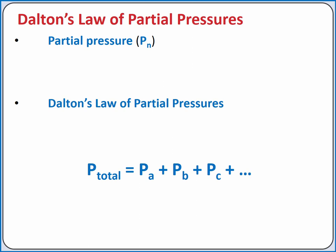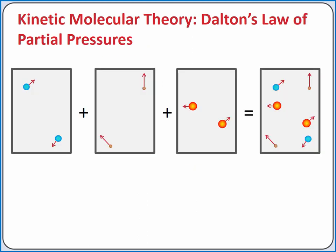Partial pressure is the pressure exerted by a component gas within a mixture. According to Dalton's law of partial pressures, the total pressure is the sum of the partial pressures of each component. This relationship can be explained using kinetic molecular theory. Pressure is caused by collisions of gas particles with a surface. We can add together the pressure from collisions of individual components in a gas mixture to get the total pressure.